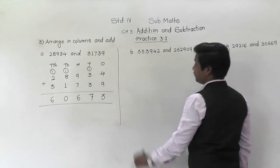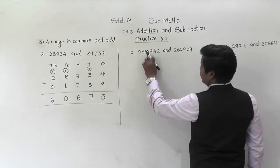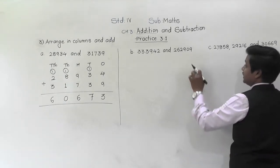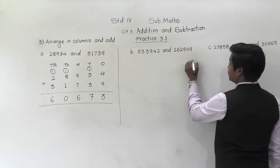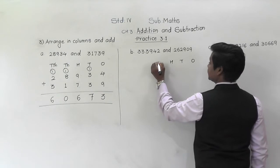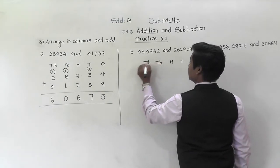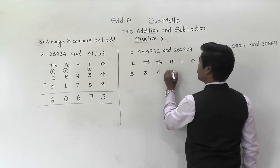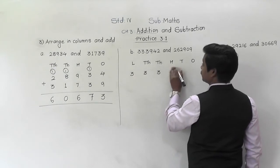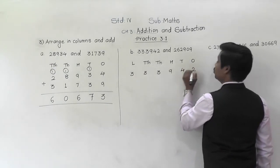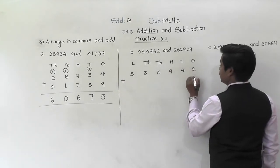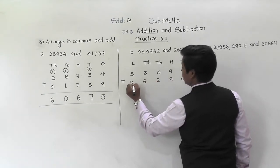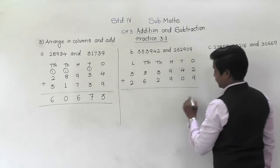Let us move towards the next example. The places are: ones, tens, hundreds, thousands, ten-thousands, and lakhs. The numbers are 3,33,942 and 2,62,999. These two numbers we have to add. First write the name of the places.